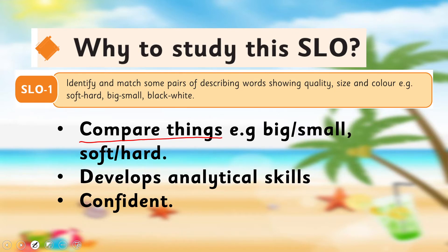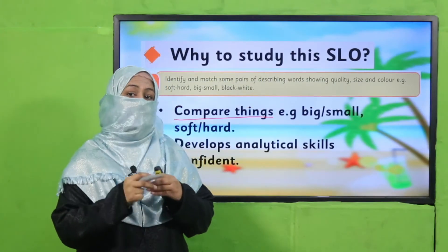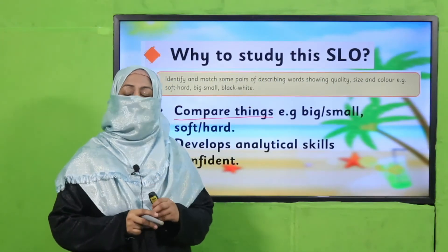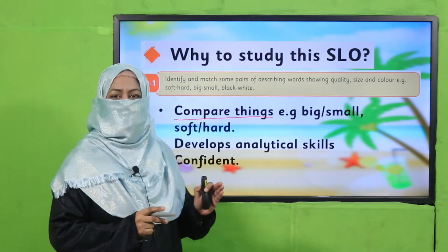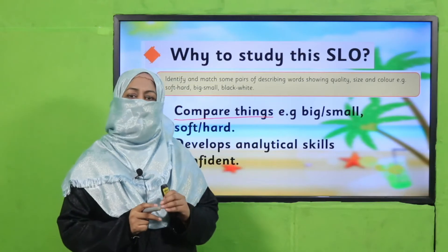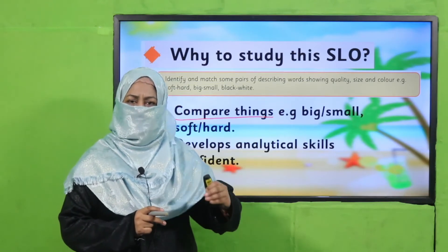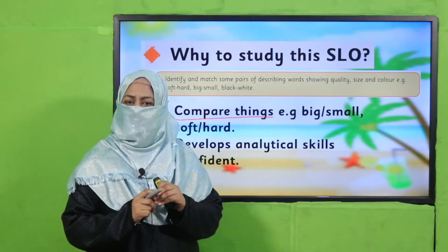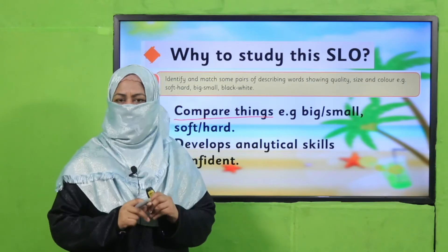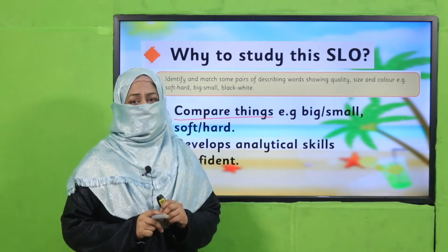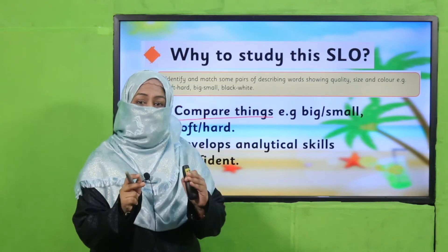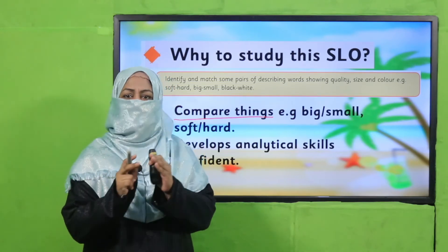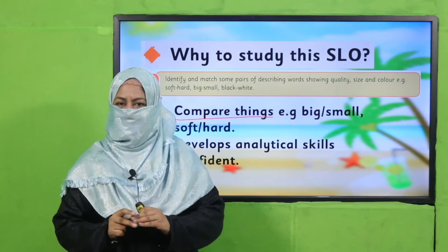This activity basically helps develop analytical skills in children. Initially, analytical skills begin to develop at home, and gradually through board activities and hands-on analysis, children become more confident. They can confidently say: this is small, this is big, this is white — this is how they learn to describe.